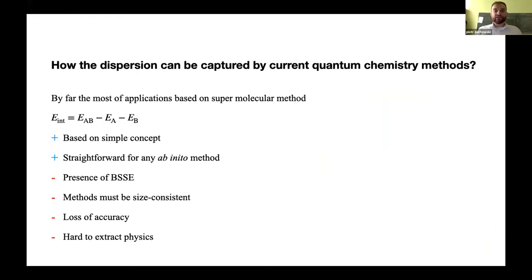So, how can dispersion be captured by current quantum chemistry methods? The easiest way to calculate the interaction energy is a supermolecular method, in which the interaction energy is essentially obtained as the difference between dimer energy and monomer energies. It's a very basic concept. So, whatever method we have, either MP2 or Hartree-Fock or coupled cluster, we can just subtract the dimer from monomer energies and it always works. It's a very straightforward application of new methods we derive.